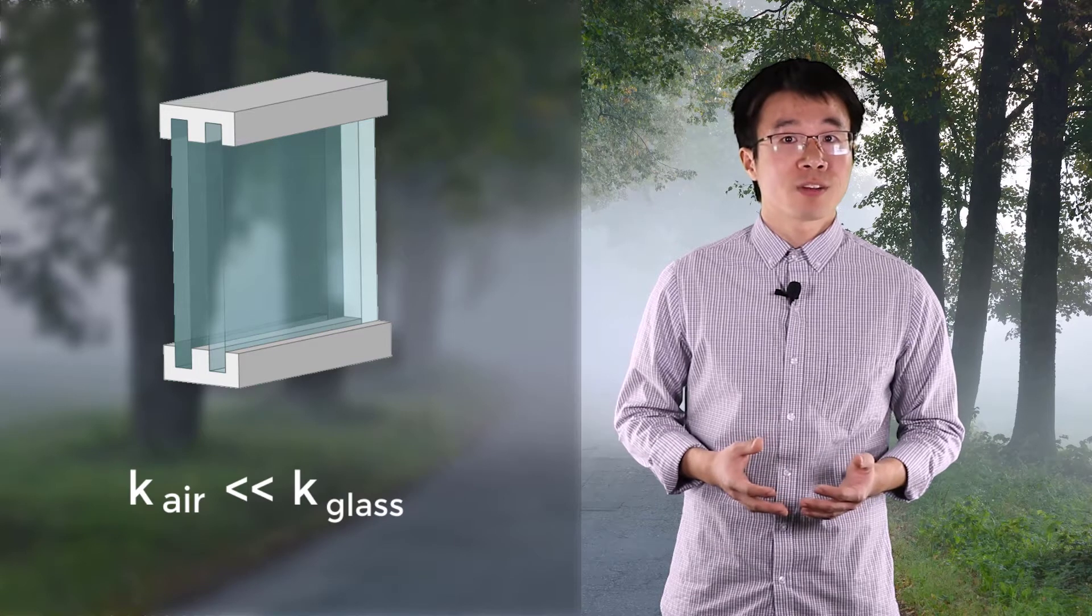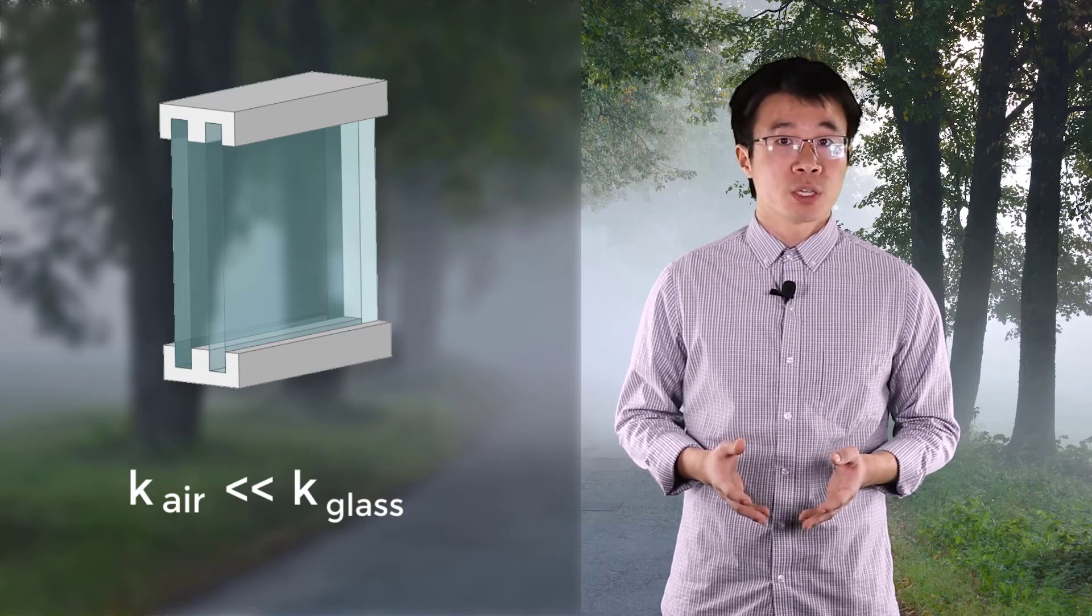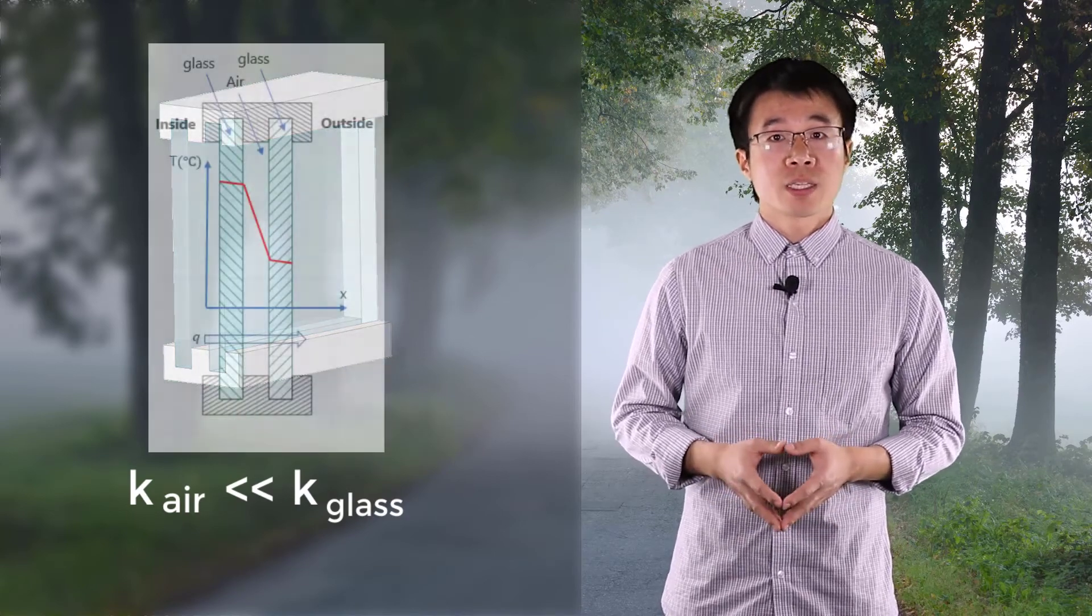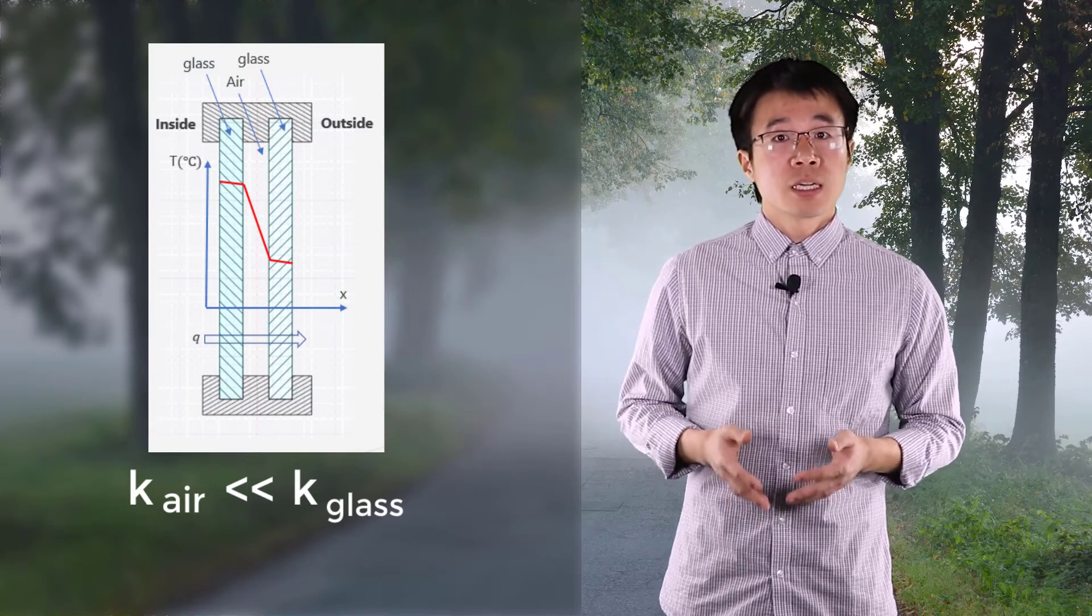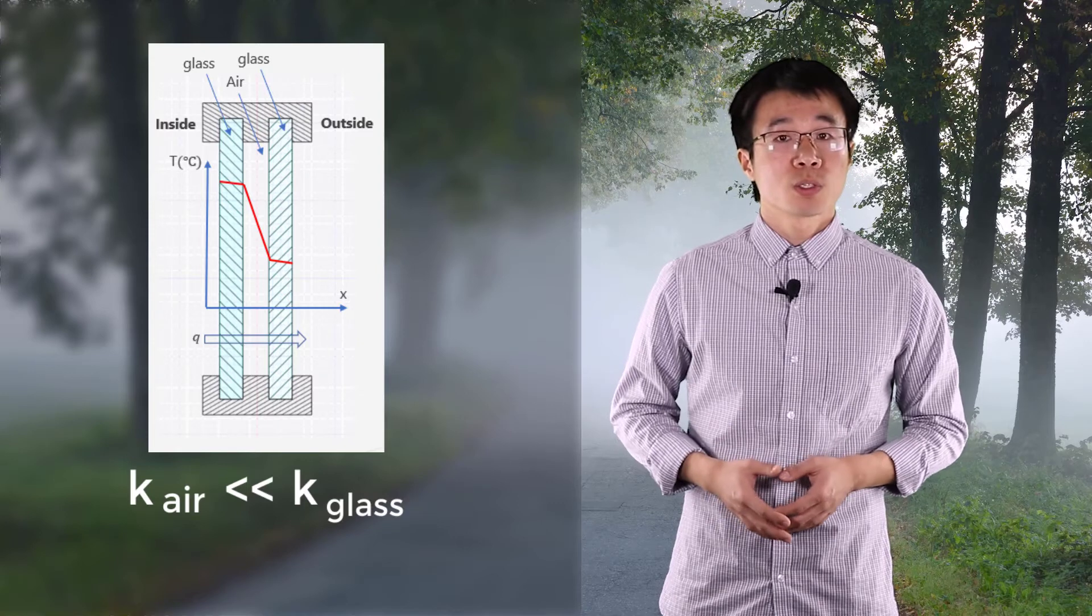Let's explain this by an example of a composite window. This window is made of two layers of glasses with air in between. How does such a composite window get good insulation results? In fact, the thermal conductivity of air is much less than glass. Thus, for the same amount of heat flux, the temperature gradient in the glass is much smaller than that in air. If we plot the temperature distribution across the window thickness, we can see that the largest temperature drop occurs in the air layer. In other words, it's the air layer that provides most of the insulation result.